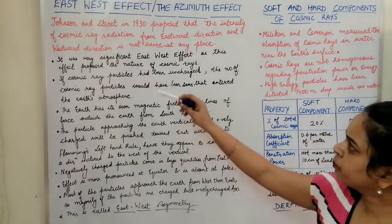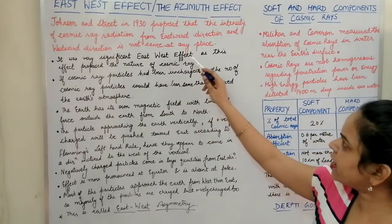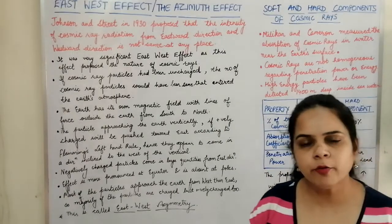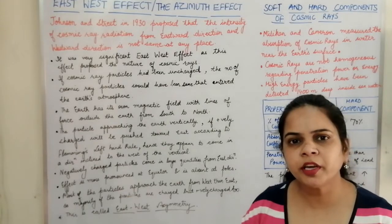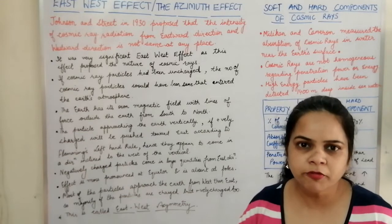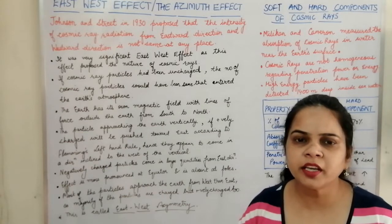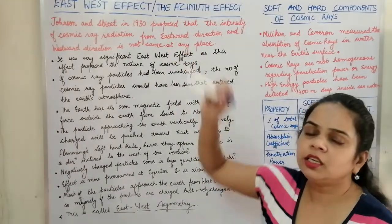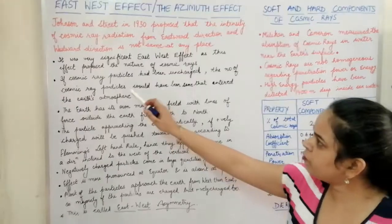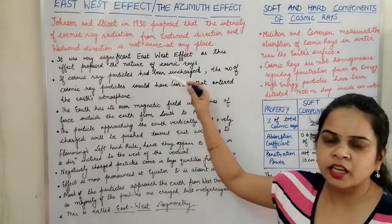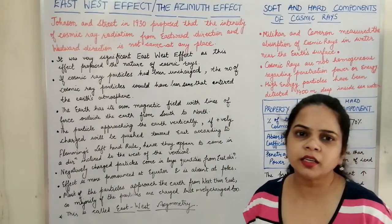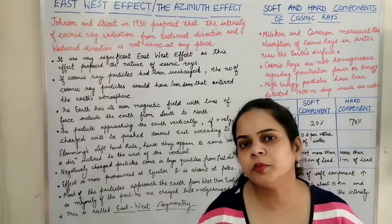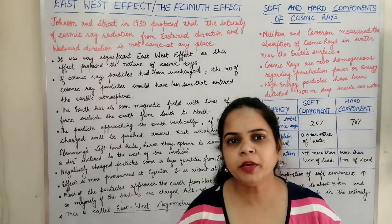This east-west direction effect was very significant because it helped determine the nature of cosmic rays — whether they were positively or negatively charged. If the cosmic rays had been uncharged particles, the number of particles at any place whether measured from the east or west direction would have been constant and the same.